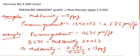In the previous example, I showed you how to find pressure gradient, which is the obvious use of this formula if you know mud density and the constant factor 0.052.